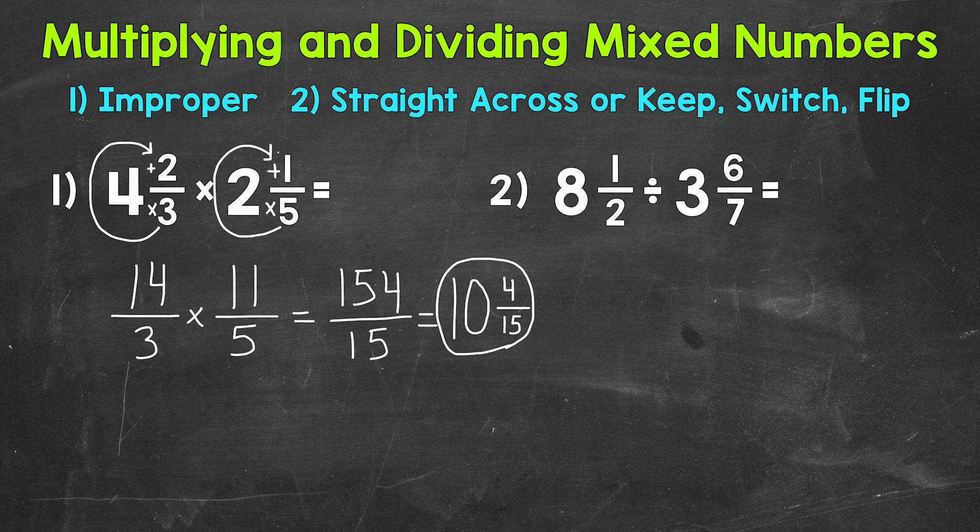Let's move on to number 2 where we have 8 and a half divided by 3 and 6 sevenths. So we need to convert these to improper fractions. Start at the bottom, work our way to the top. Multiply and then add.